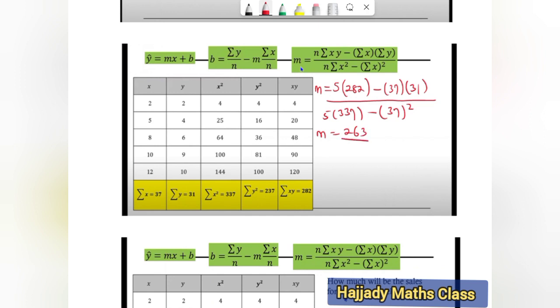So I need to get b, and don't forget we are making use of this formula for b, which is summation y over n minus m times summation x over n, which is the same thing as 31 over 5 minus m, which is 0.83, multiplied by 37, which is summation x over 5. So from this I have that my b will be equal to 6.2 minus 0.83 multiplied by 7.4, so my b is going to be approximately 0.06.